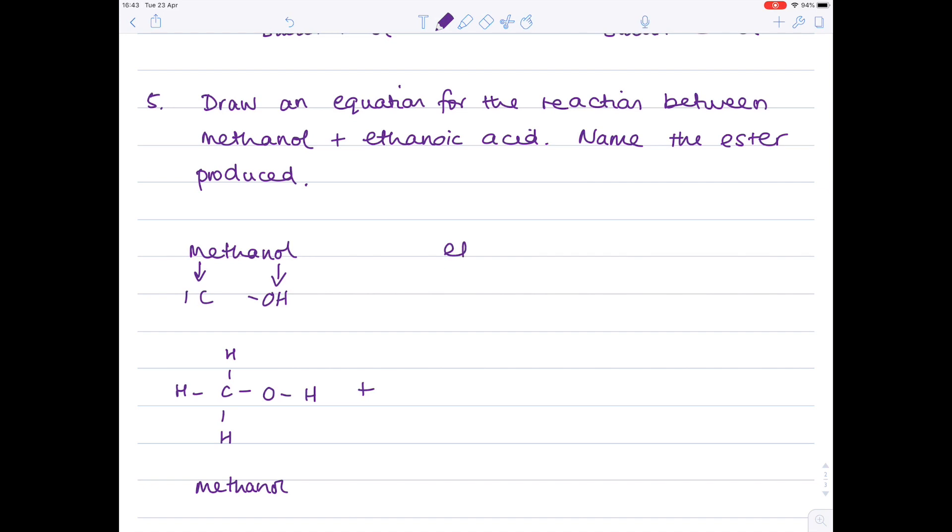Ethanoic acid now. Eth meaning that it contains two carbons. It's anoic acid, which means it has this functional group. So let's just draw that now.